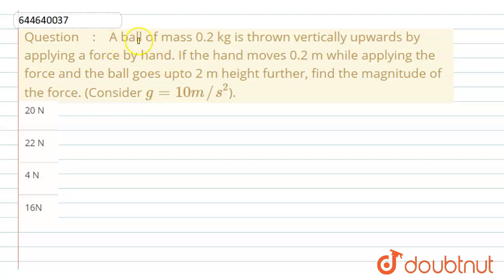Hello dear students, here the question is: a ball of mass 0.2 kg is thrown vertically upward by applying a force by hand. If the hand moves 0.2 meter while applying the force, the ball goes up to 2 meter height. Further, find the magnitude of the force and take gravity g equals 10 meter per second square.